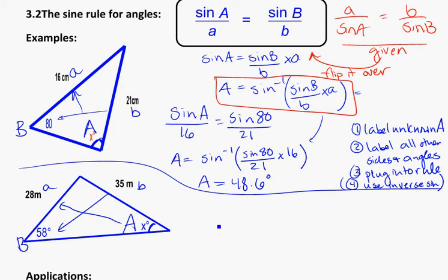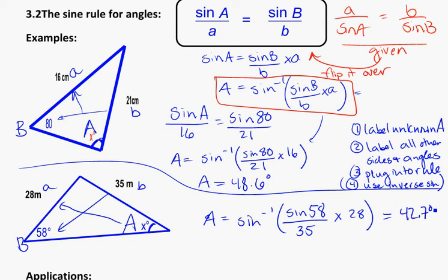So plugging that into the formula, I can do it as a shortcut and say A is equal to sin inverse of sin 58 divided by 35 times 28. And if I do it this way, I get straight to the answer of 42.7 degrees. So A is equal to 42.7 degrees.